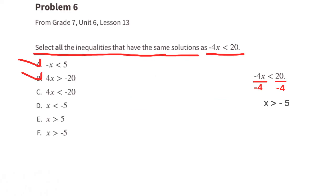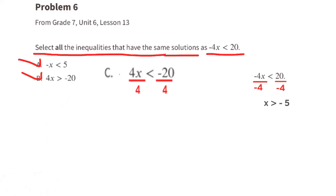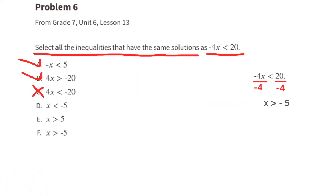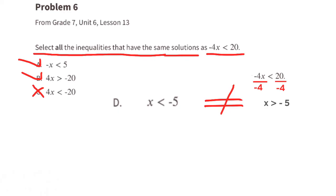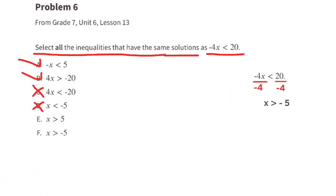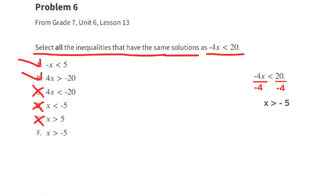Option c: 4x is less than negative 20. Divide by 4: x is less than negative 5. Not the same as the original. Option d: x is less than negative 5 — also not the same. Option e: x is greater than 5 — not the same. Option f: x is greater than negative 5 — yes, that is the same as the original inequality. So the correct selections are a, b, and f.